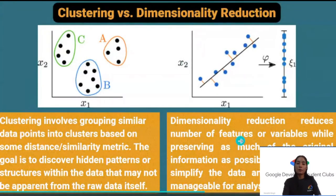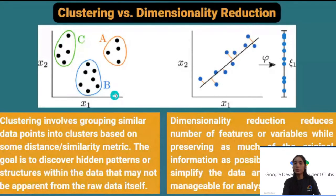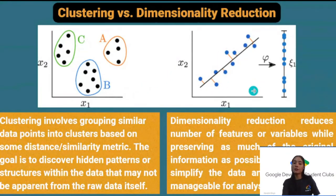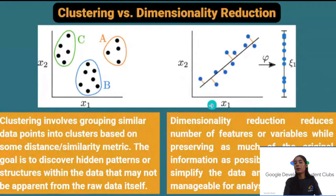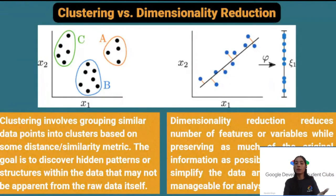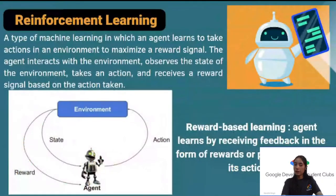A clustering graph shows data points grouped based on distances between them. A dimensionality reduction graph shows how two variables x1 and x2 can be represented by a single new variable, reducing complexity and making data easier to visualize. Anomaly detection identifies data points that deviate significantly from the overall trend.